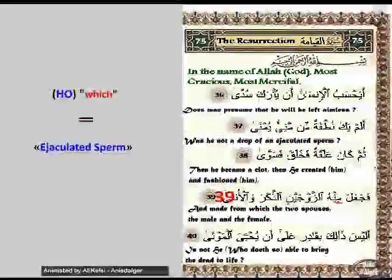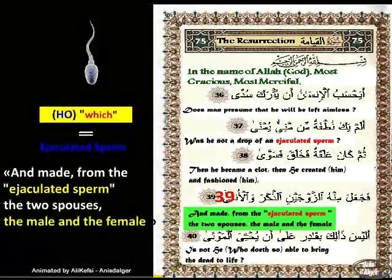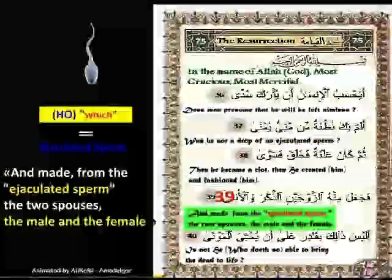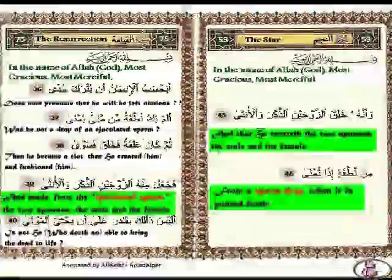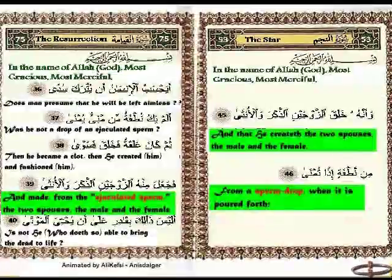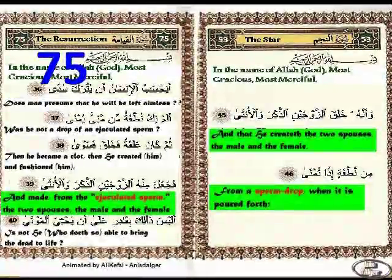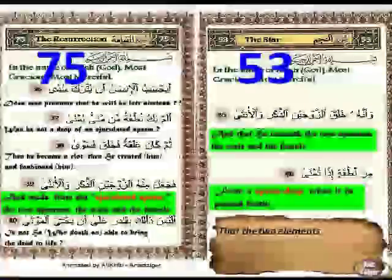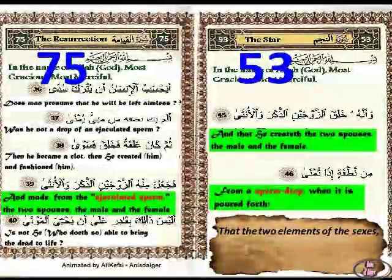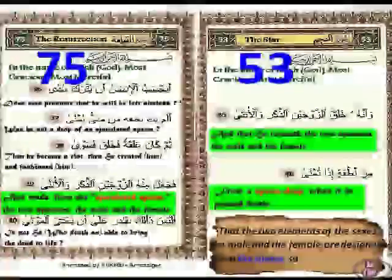Therefore, verse 39 is written as: 'and made from the ejaculated sperm the two spouses, the male and the female.' Finally, these verses of chapter 75 confirm what is already attested clearly in verses of chapter 53 — namely that the two elements of the sexes, the male and the female, are determined from the sperm, so from the male.